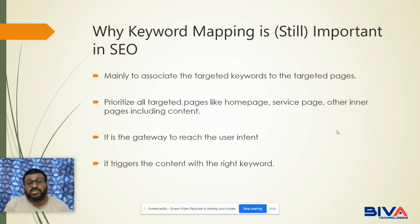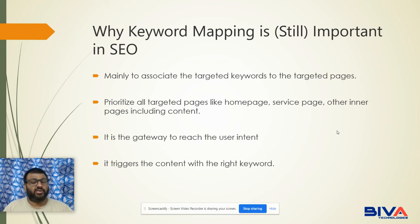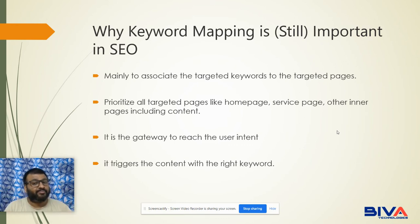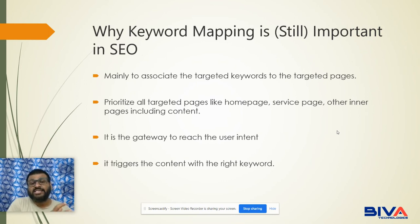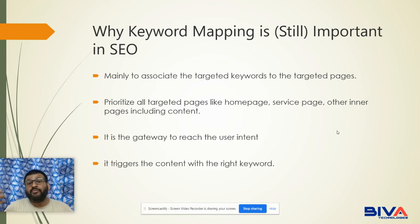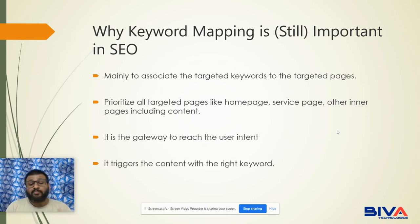Mainly, to associate the targeted keywords to your targeted pages. In every website there are multiple pages, and across those pages you will have to trigger the targeted keyword to get the targeted result. Every website has many pages and all the pages have different intentions — some pages are providing information, some pages are conducting sales or conversion. As a result, you will have to embed your keywords in every page accordingly.